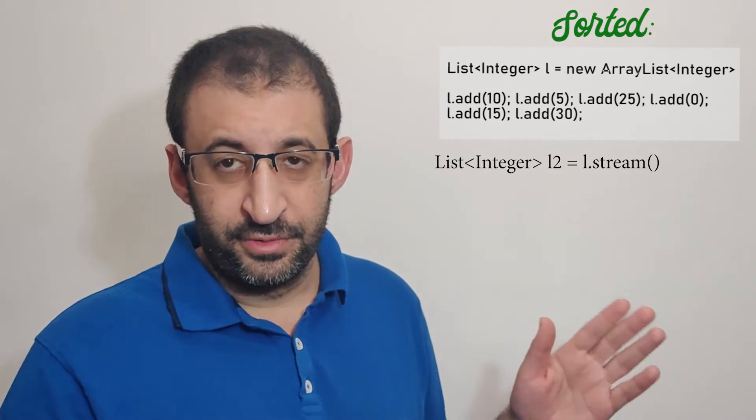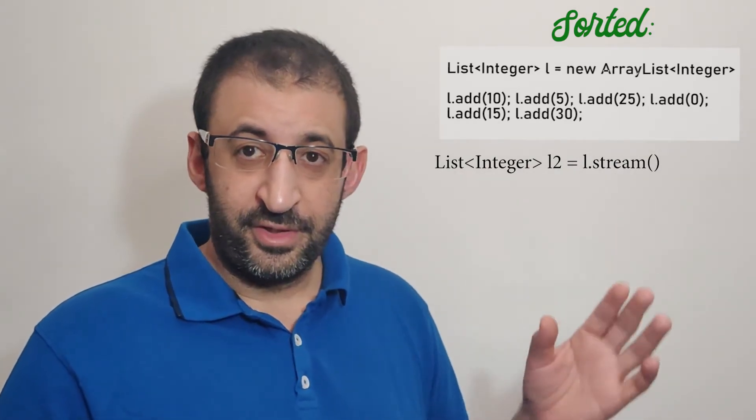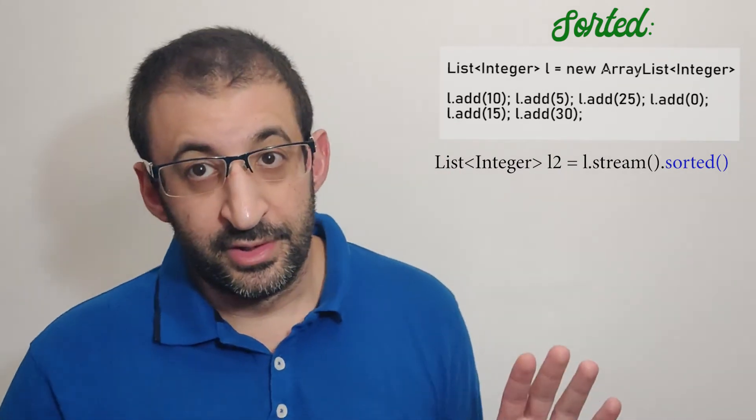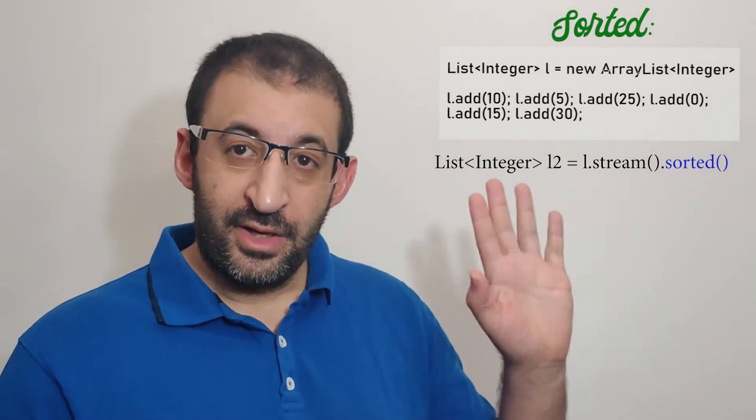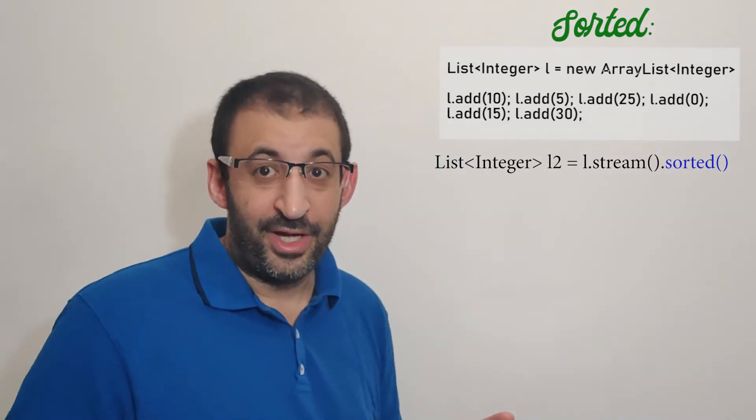Now if I want to sort this list with the default order, I create a new list. List2 equals list1.stream(), then I do sorted() without any argument. After that, I must collect them to retrieve them, so I use collect with Collectors.toList(). Here I have used the default sorting order. I will execute this program on the computer.